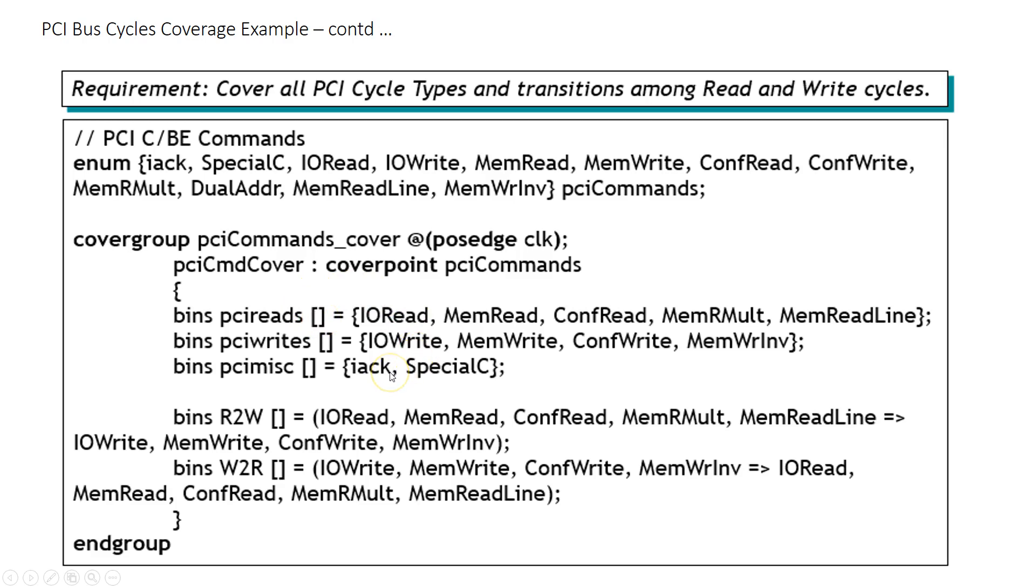Similarly for write and similarly for the miscellaneous cycles. But now that is fine but in all honesty when you are doing functional coverage, when you are testing your DUT, the transitions is where things can go wrong. For example, you go from IORead to IOWrite or you go from IORead to MemWrite or you go from MemRead to IOWrite. But these transitions is where you may have bugs. And we have to make sure that your testbench has exercised each of these transitions.